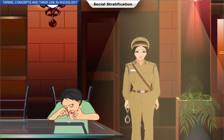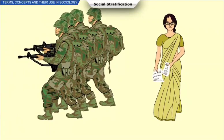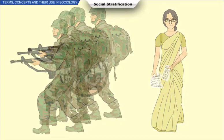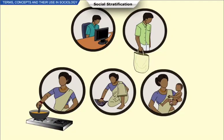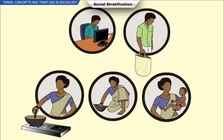Sometimes certain roles are assigned to specific members of society, which may result in role stereotyping. Gendered roles can be an example of role stereotyping, in which men are considered to work and earn money, whereas women are assigned the roles of looking after the house. These roles are sometimes thought to be fixed, and any change in these roles is not approved by the larger society.